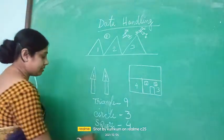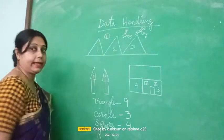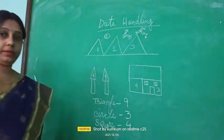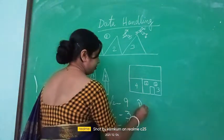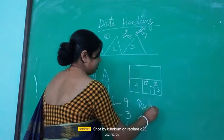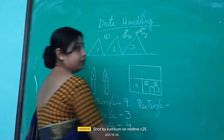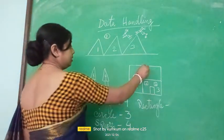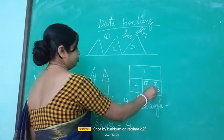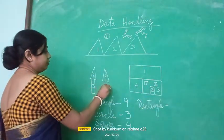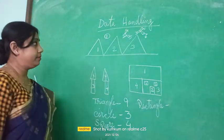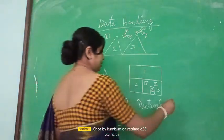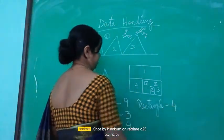And the last one is rectangle. How many rectangles are here? We can see one, two, three, four. So in the picture we can see four rectangles. We will write here four.